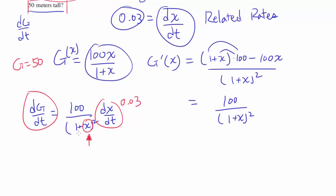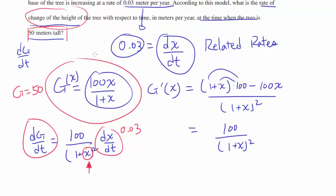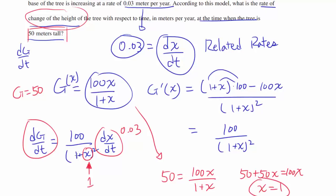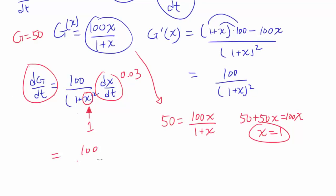Once we have x, we are done. And how do you find x? Well, by looking at this equation. G, or in our case 50, is 100 times x/(1+x). And we can find x. 50 + 50x = 100x. Solving this quickly gets you that x = 1.